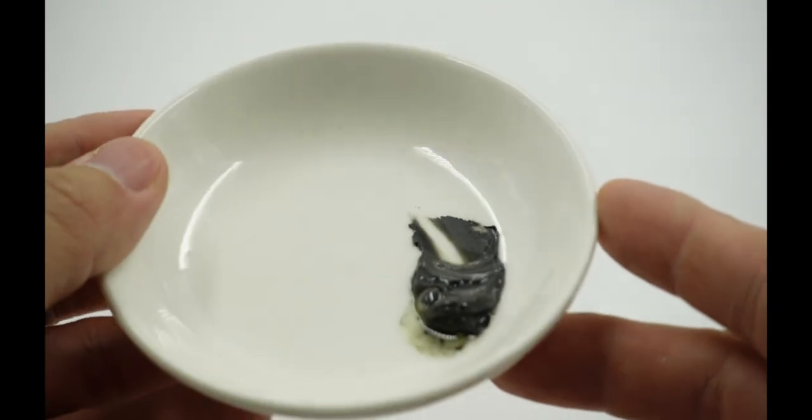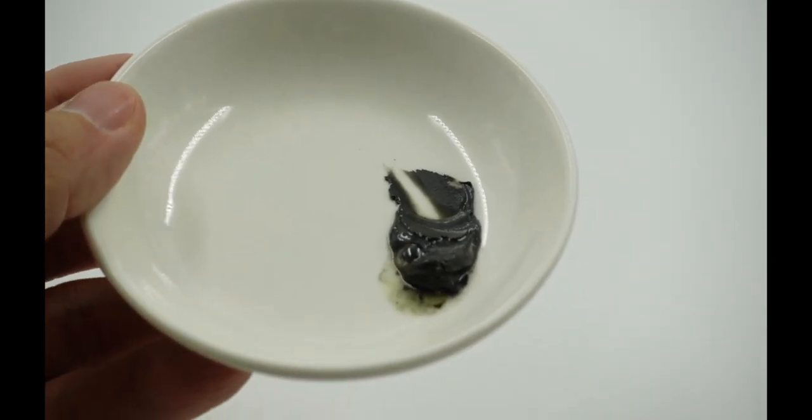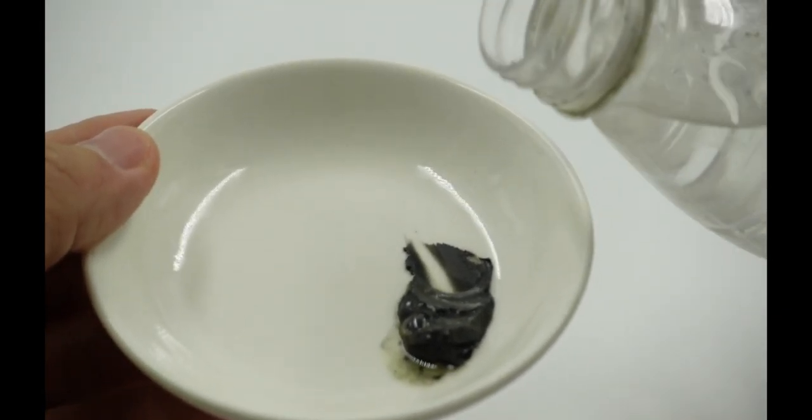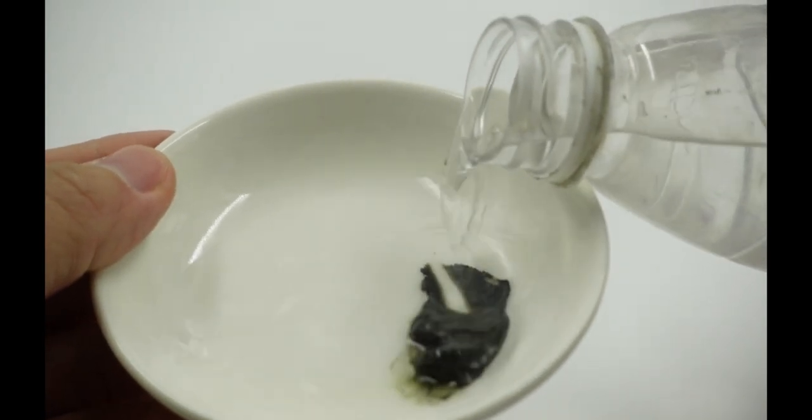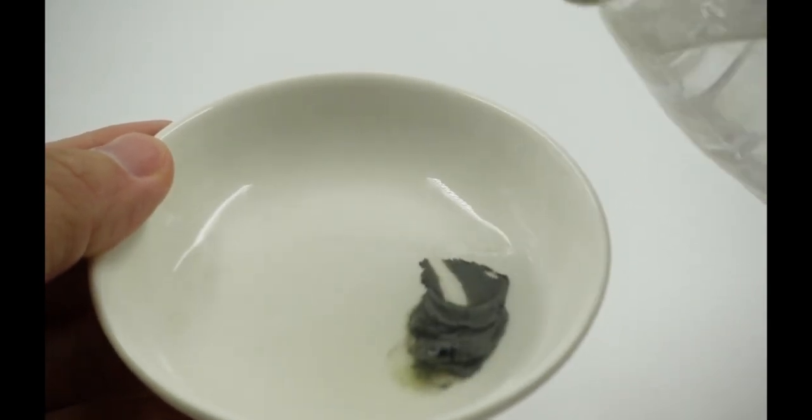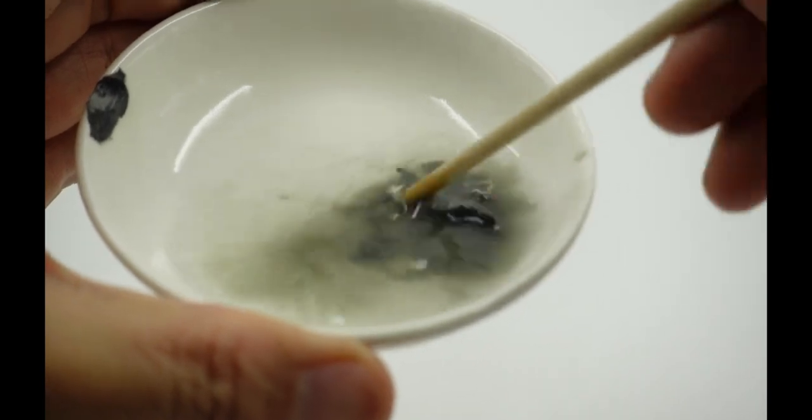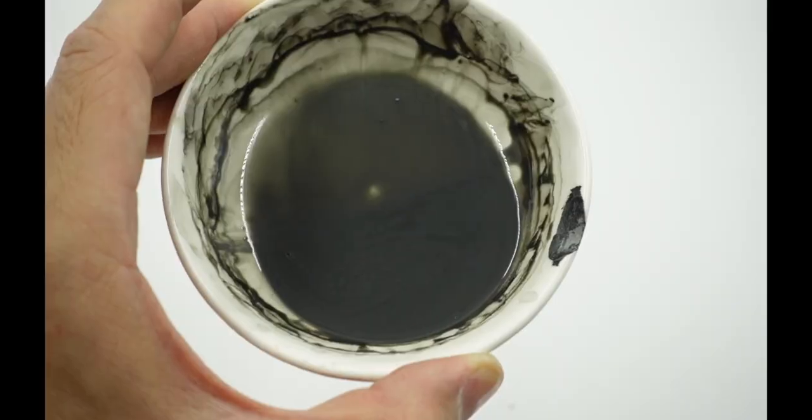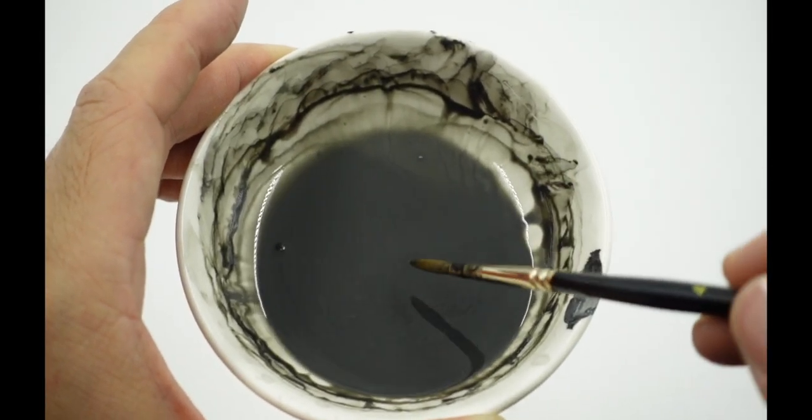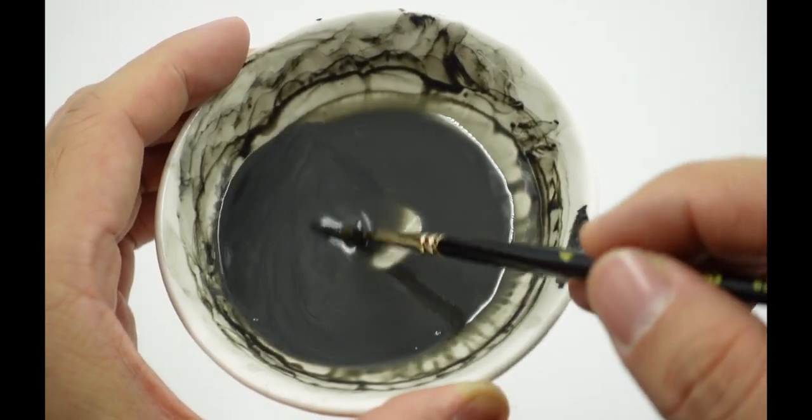Next, we have some oil paint. We use a solvent like turpentine or even lighter fluid to create the mixture by diluting the oil paint to a consistency as shown.